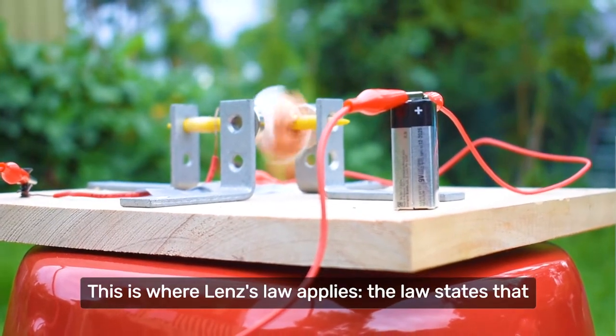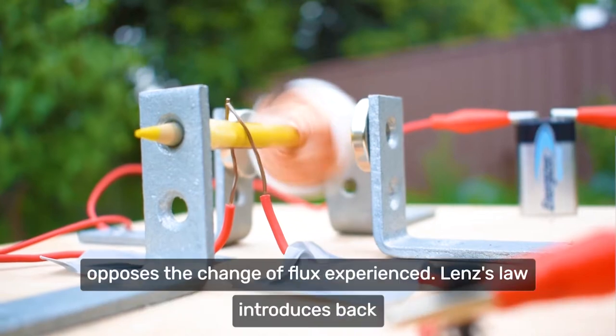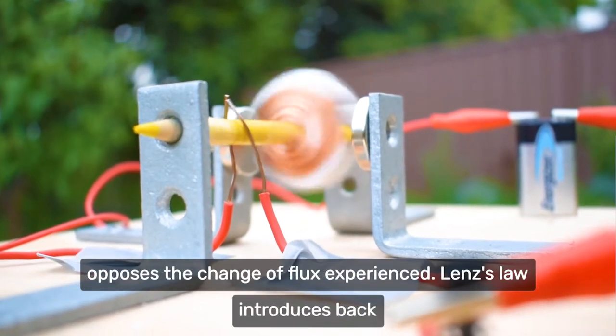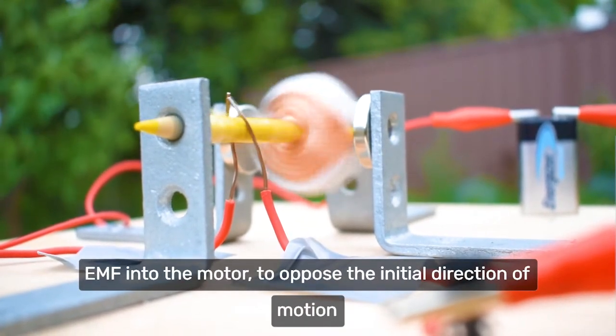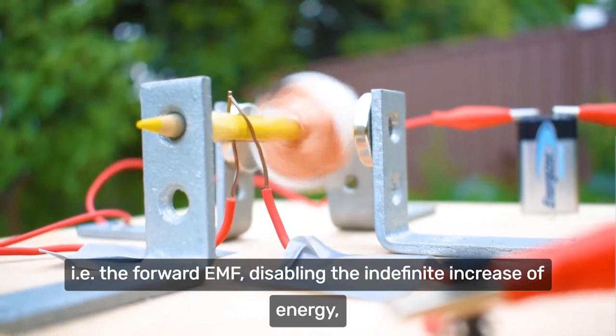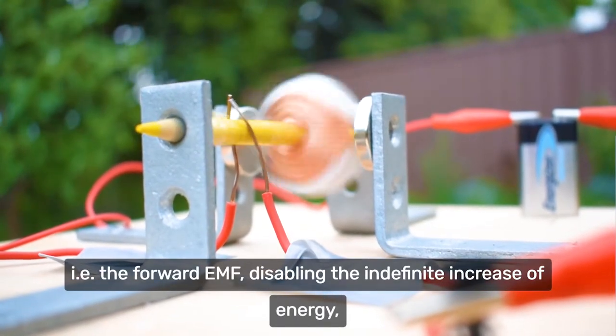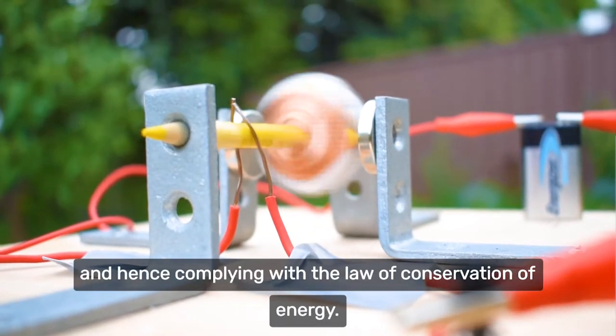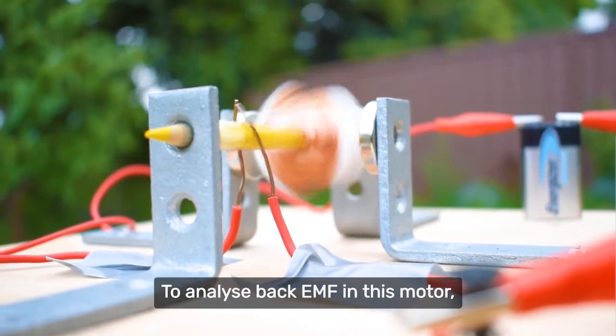This is where Lenz's law applies. The law states that a current will be induced by the conductor such that it opposes the change of flux experience. Lenz's law introduces back EMF into the motor to oppose the initial direction of motion, i.e. the forward EMF, disabling the indefinite increase of energy, and hence, complying with the law of conservation of energy.